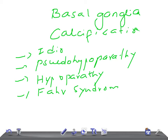The other syndrome is Cockayne syndrome. It is characterized by growth failure, impaired development of the nervous system, and abnormal sensitivity to sunlight — very important. It is also known as premature aging. Other features include hearing loss and eye problems. I am going to discuss about this in a later video.